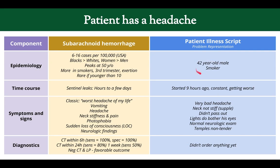Comparing to our patient: age 42 somewhat matches, smoker matches. The headache started nine hours ago, constant and getting worse — that fits the time frame. A very bad headache may represent the 'worst headache of my life.' However, his neck is not stiff, and neck stiffness is a classic feature — though not everyone will have it, as illness scripts represent averages across many patients.